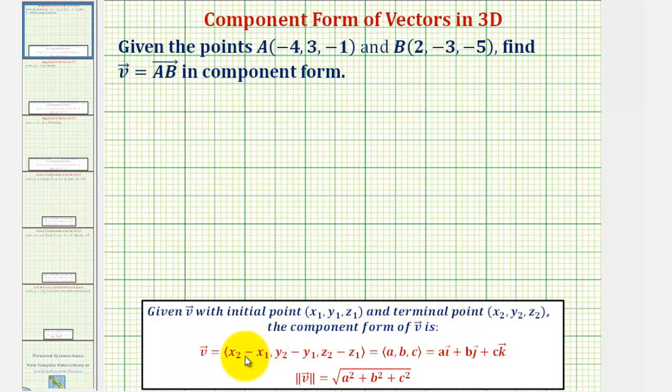notice how for the X component, we find the difference of the X coordinates. To find the Y component, we take the difference of the Y coordinates. And to find the Z component, we find the difference of the Z coordinates. Where X sub one comma Y sub one comma Z sub one is the initial point and X sub two comma Y sub two comma Z sub two would be the terminal point.